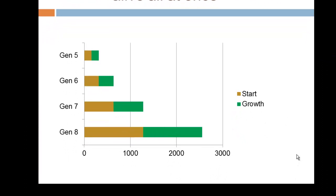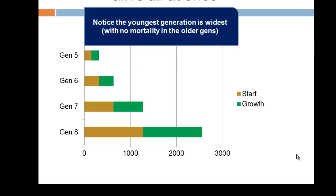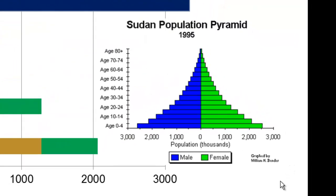Now let's change our assumptions and assume four generations are alive all at once — generations five through eight. If we lay these side by side, the most recent generation is the broadest. Generation five is quite narrow relative to generation eight, producing a pattern we see in rapidly growing populations where the youngest generations are the widest.